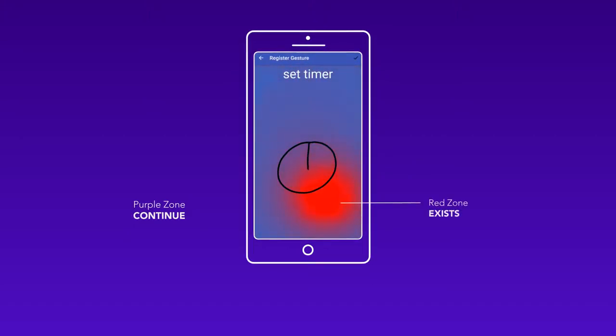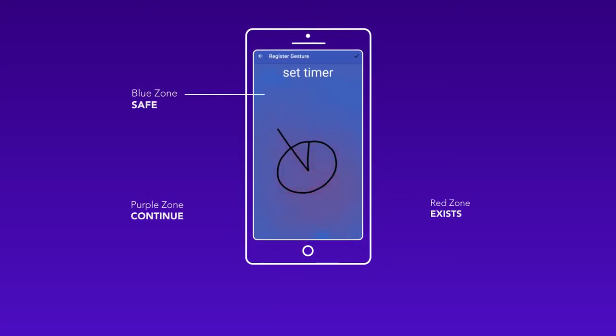Gestures that end in a red zone already exist — either continue drawing or try again. Gestures that end in a blue zone are unique and easy for the system to recognize.